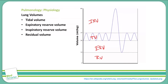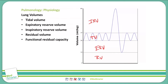These are the four volumes that we can measure with spirometry, and beyond that we can calculate capacities based upon at least two or more of these individual volumes. One of those capacities is the functional residual capacity, which is the residual volume plus the expiratory reserve volume, as seen here.